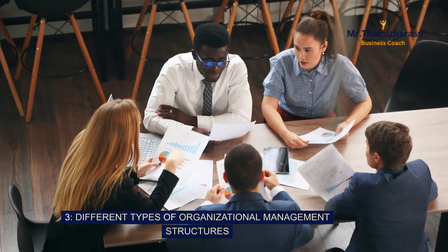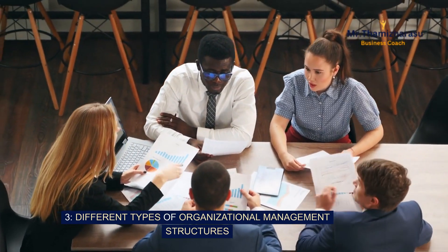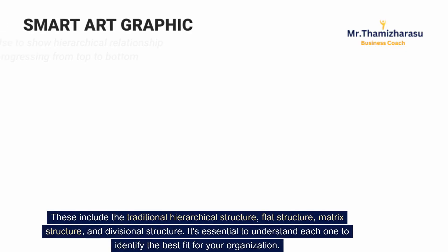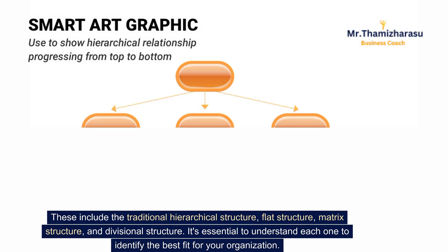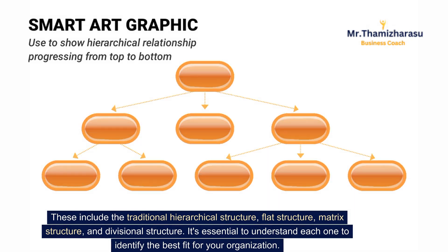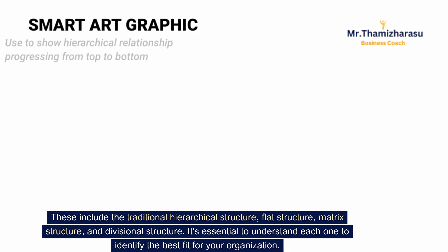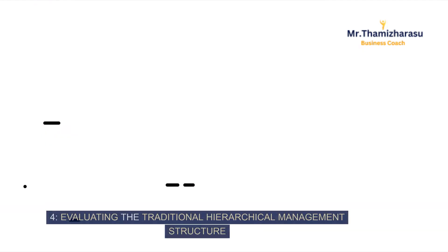Different types of organizational management structures. There are several types of management structures, each with its own merits and demerits. These include the traditional hierarchical structure, flat structure, matrix structure, and divisional structure. It's essential to understand each one to identify the best fit for your organization.